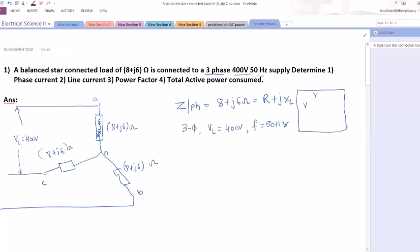In star, VL equal to root 3 Vphase and IL equal to Iphase. These are the two formulas. If you take a delta, VL equal to Vphase, IL equal to root 3 Iphase. These two formulas you need to remember. Now, first he is asking to find out phase current. That is Iphase. Remember, the formula for Iphase in a three phase circuit is Vphase by Zphase.